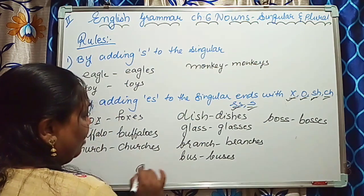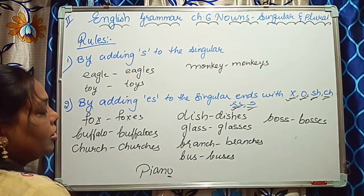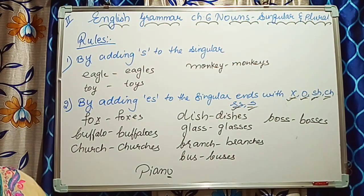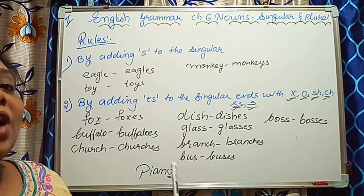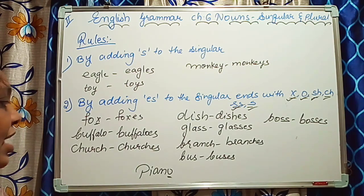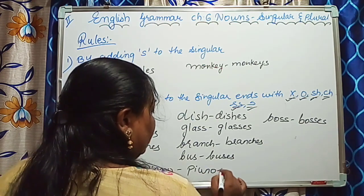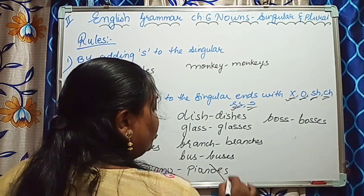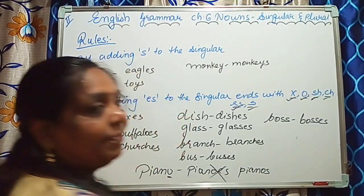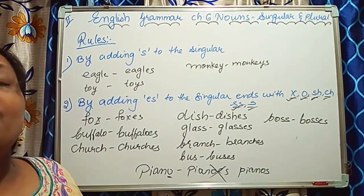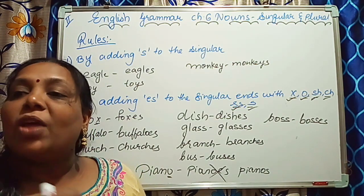For example, I have written piano. Here also the word ends with O. But in this case we cannot add ES. Instead, we just add S — pianos. In some words that end in O, only S is added to form the plural.